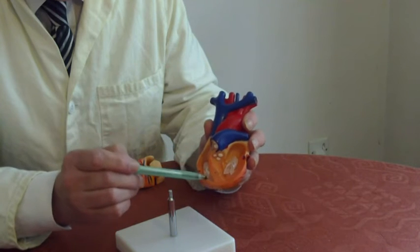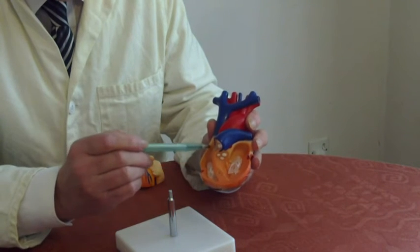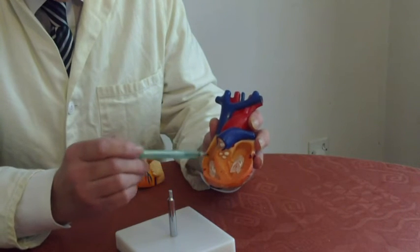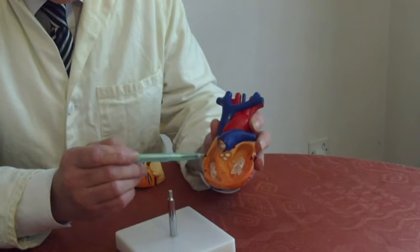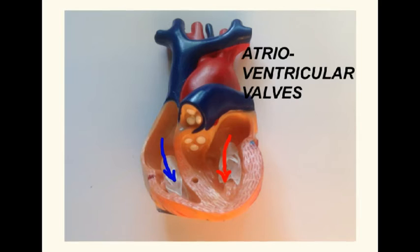Between each atrium and its ventricle there is a one-way valve called the atrioventricular valve. This will only allow blood to flow from an atrium to a ventricle, and not from a ventricle to an atrium.